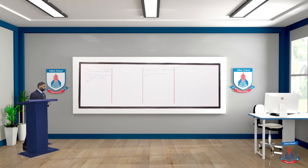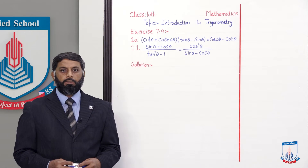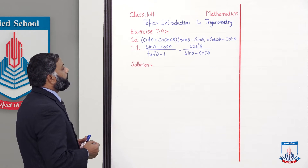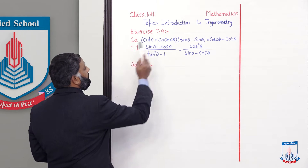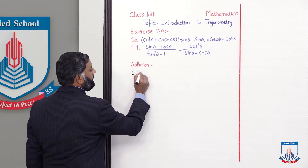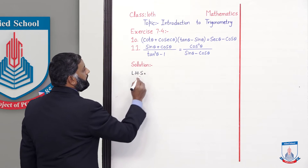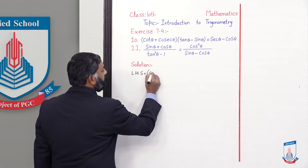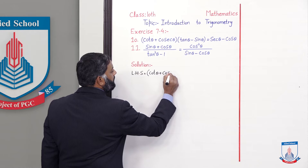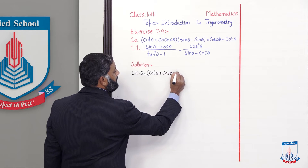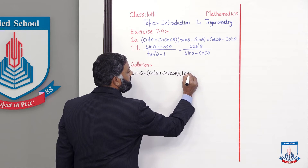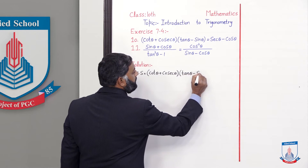Go to the board. Yes students, question number 10 solve. Question number 10 left hand side: (cot θ + cosec θ)(tan θ − sin θ).